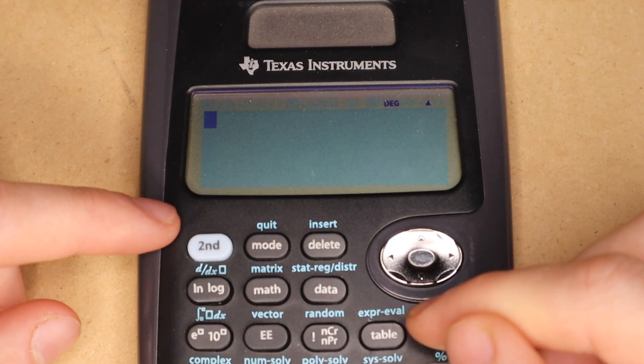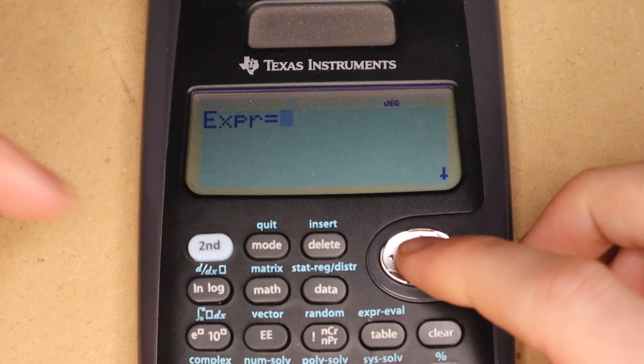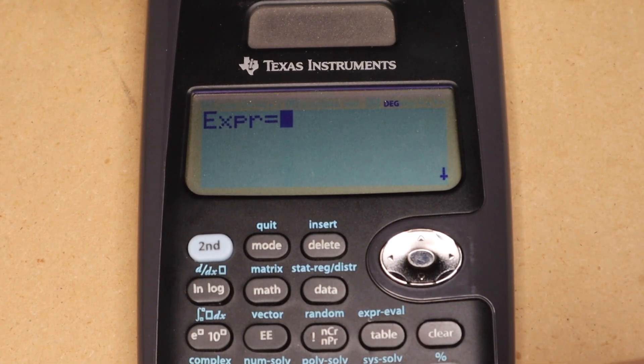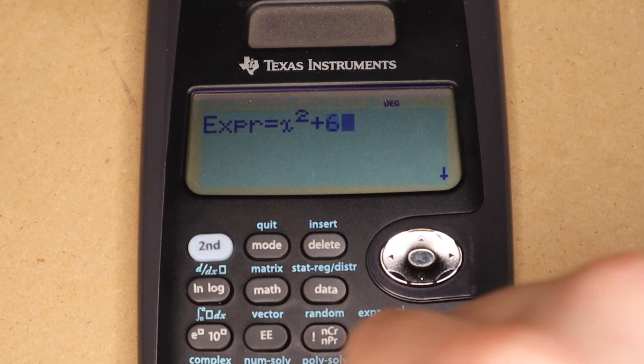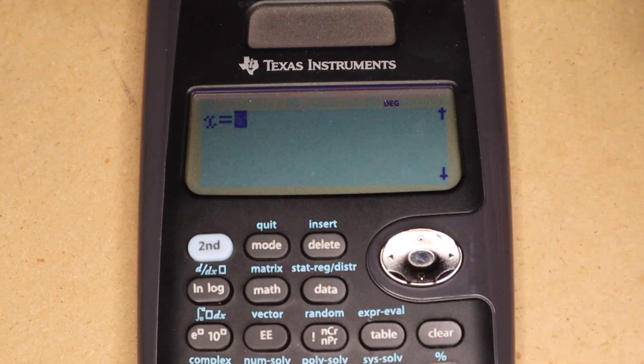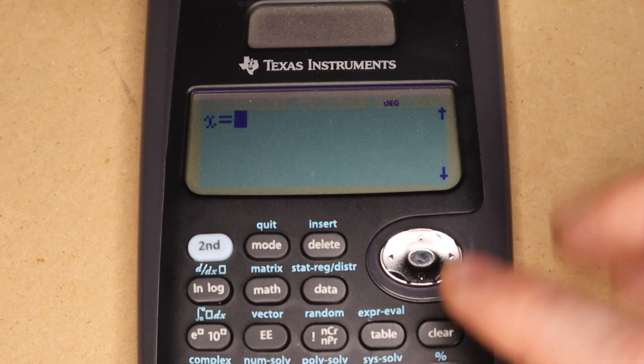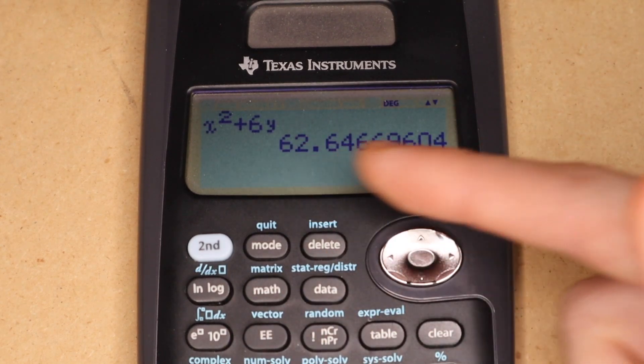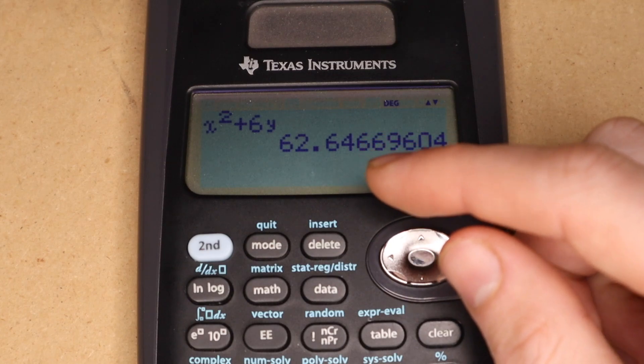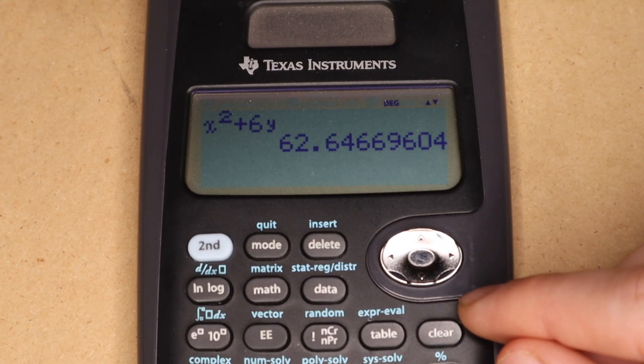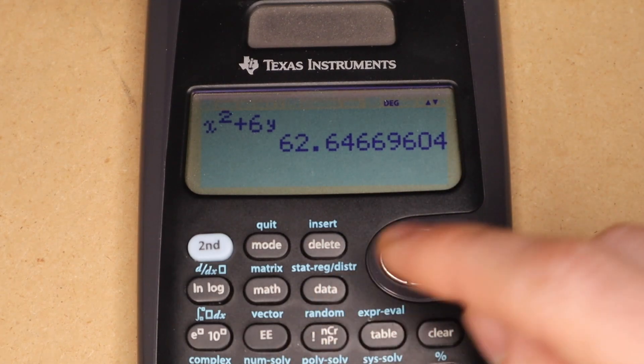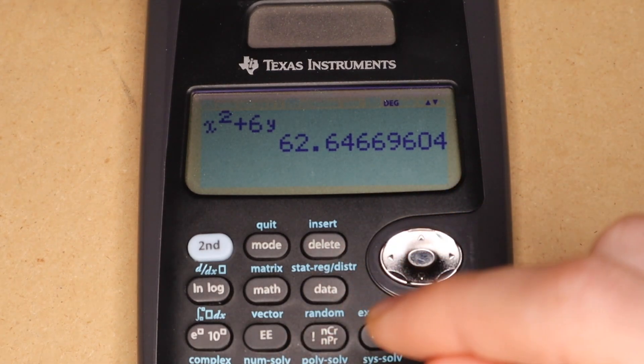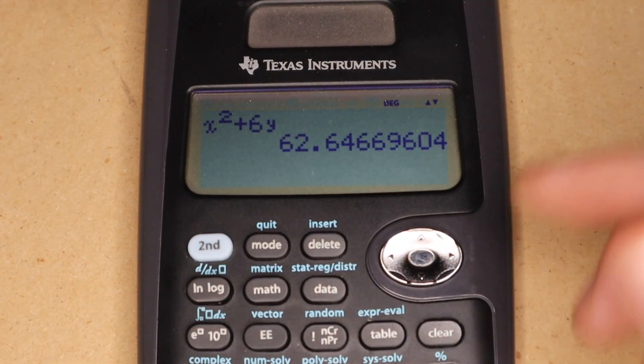This next feature is called expression eval, and you get it by pressing second table. Here you can enter an expression with variables. So for example, x squared plus 6y. And then if you press enter, you will be prompted to enter values for x. So I'll just do 7.2598 and 1.657. And then if you press enter, it will evaluate that expression from those values of x and y. And this is useful mostly if you have a big long equation, and you don't want to type in each x value or y value a bunch of times into the calculator. You can just enter it as x and y, and then tell the calculator what x and y are equal to, and it will evaluate that for you.